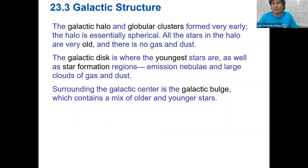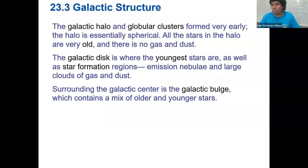The galactic disk is where we have the youngest stars and star formation regions — reflection nebulae, emission nebulae, molecular clouds. Surrounding the galactic center you have the galactic bulge, which has a mix of older and younger stars. There is no dust in the halo, but there is a lot of dust in the disk where star formation happens.